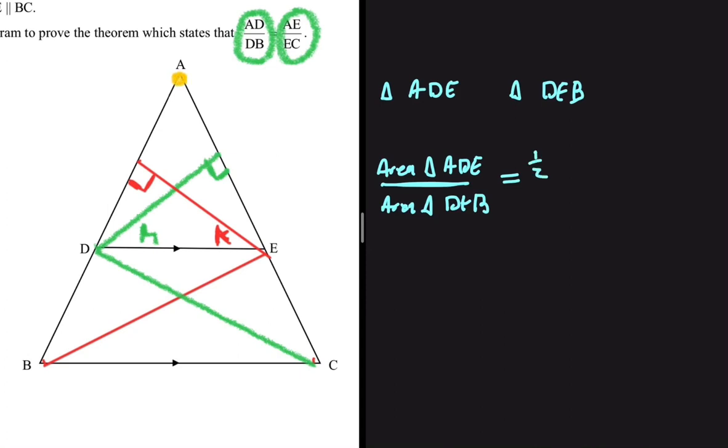So here's triangle ADE. The base is AD and the height is K. So we're going to have half AD multiplied by K divided by the area of triangle DEB.